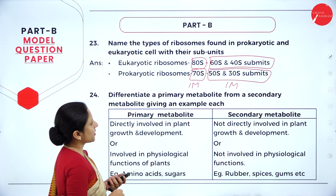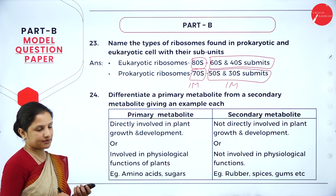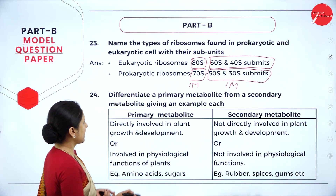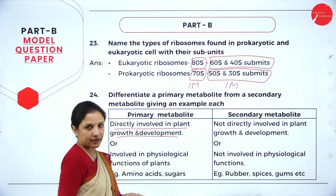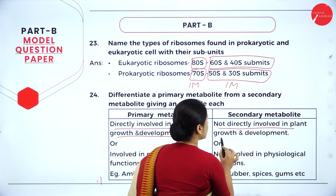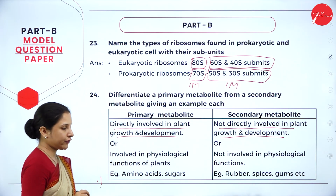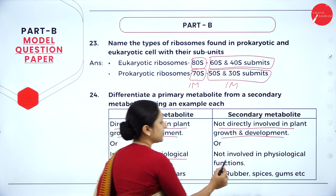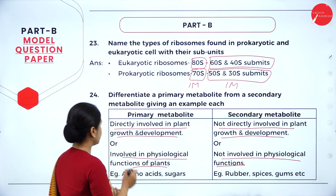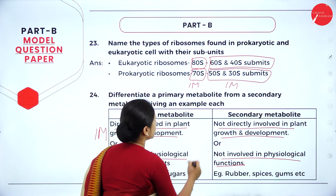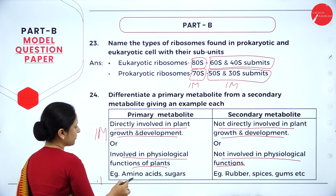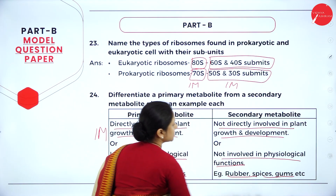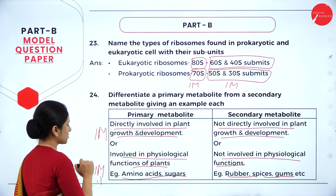Question 4: differentiate primary metabolites from secondary metabolites with examples. Primary metabolites are directly involved in the growth and physiological functions of the plant — examples include amino acids and sugars. Secondary metabolites are not directly involved in plant physiological functions but are useful to humans — examples include rubber, spices, and gums. One mark for the difference and one mark for examples, totalling 2 marks.